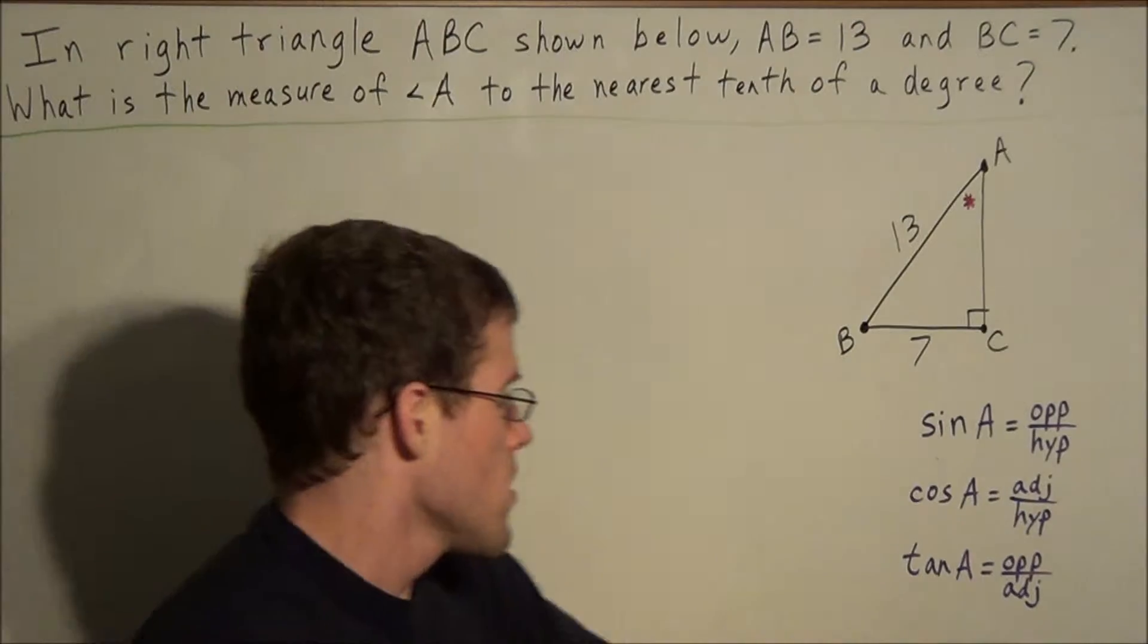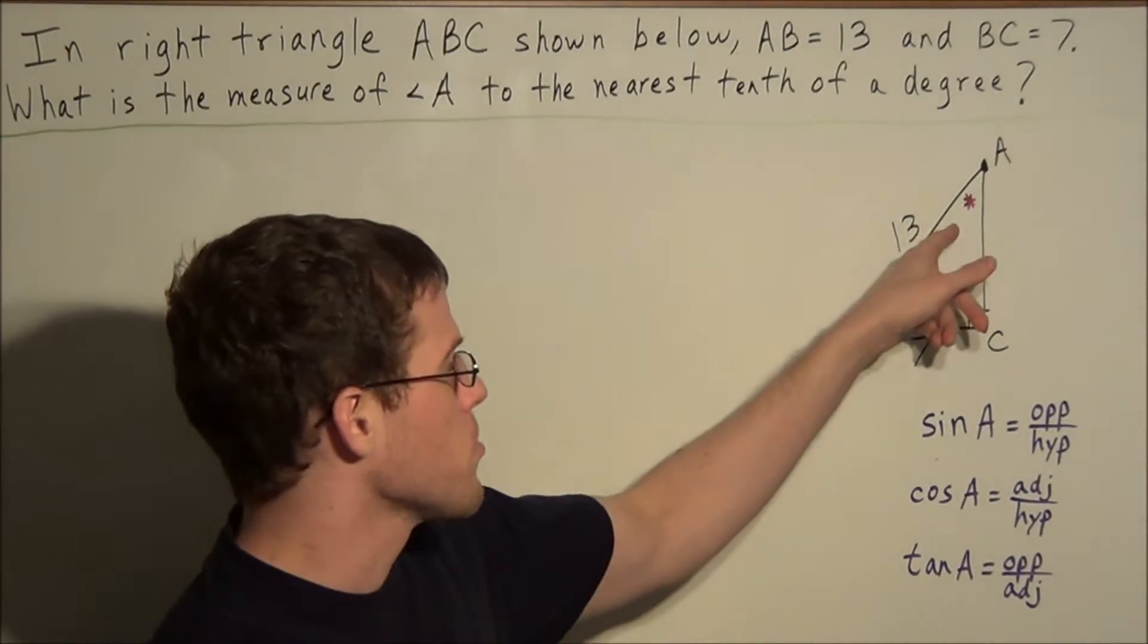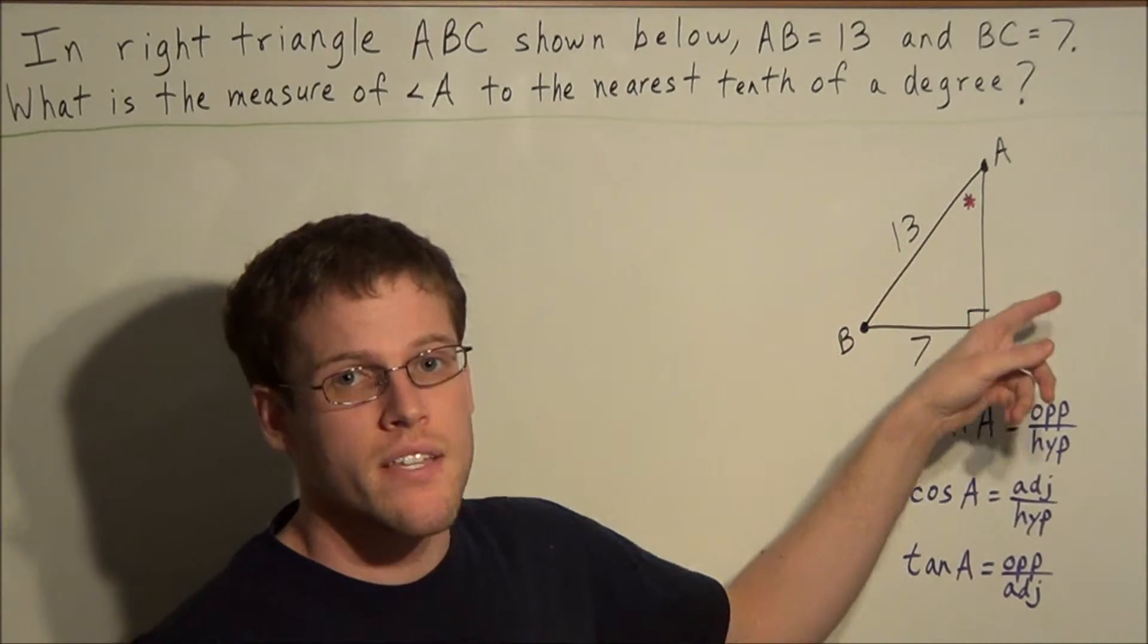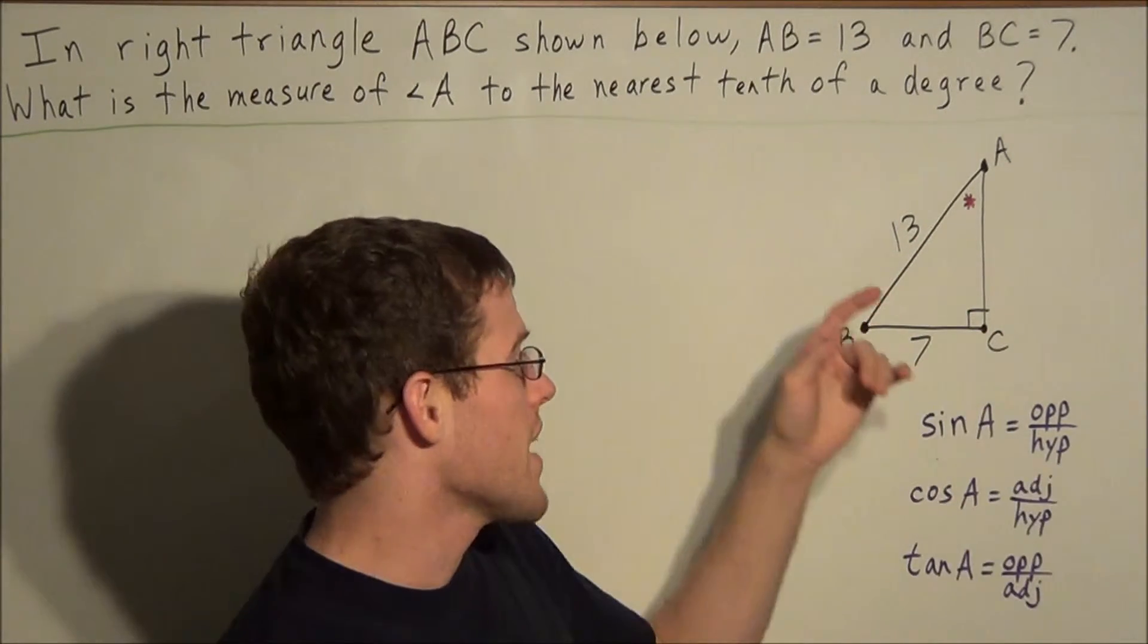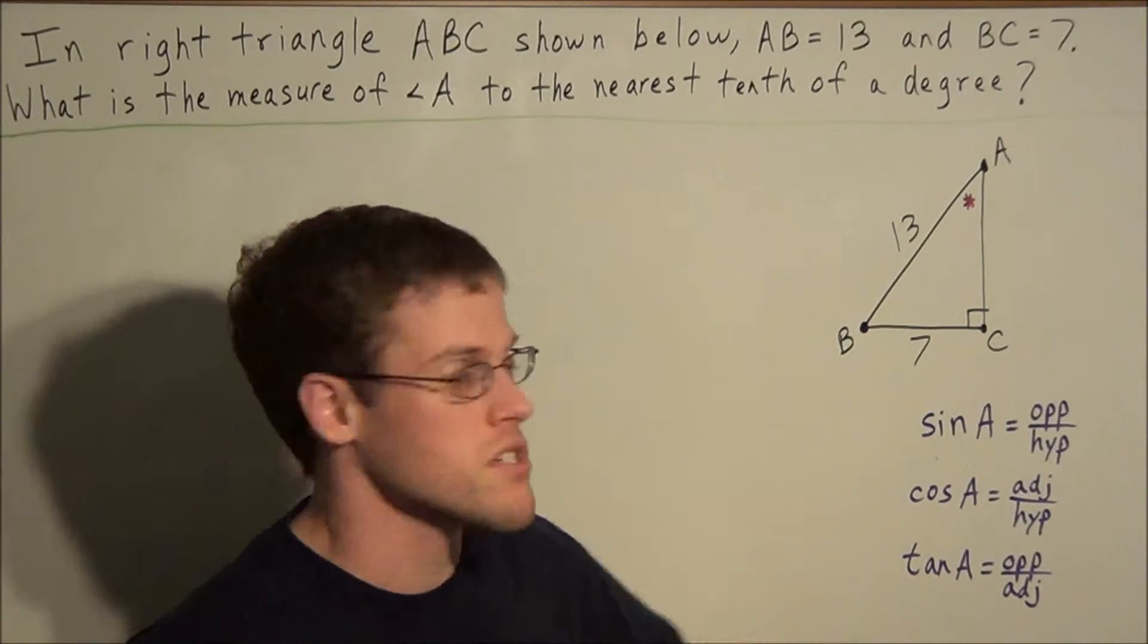To find the measure of angle A, this is going to be our reference point, and we want to think about the side opposite of A, the side adjacent to A, and the hypotenuse of this right triangle. So we can start off with labeling the easiest piece of information.